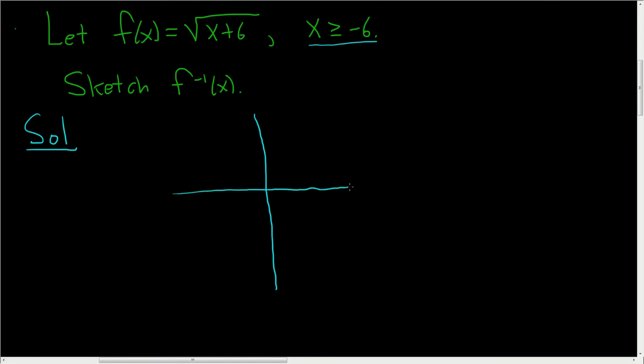So here's x, and here's y. Before we sketch the inverse, let's sketch f. I'm going to use yellow to sketch f. So f is the square root of x plus 6, so it's the square root function.